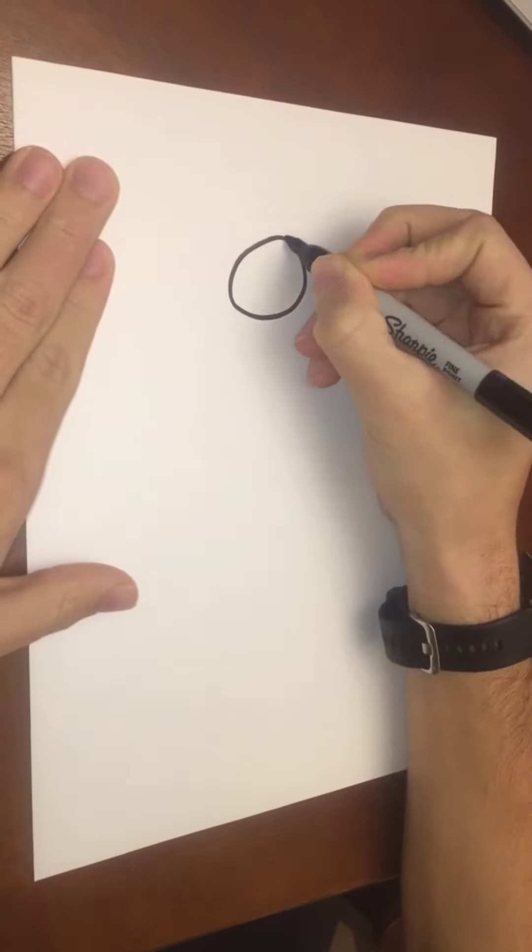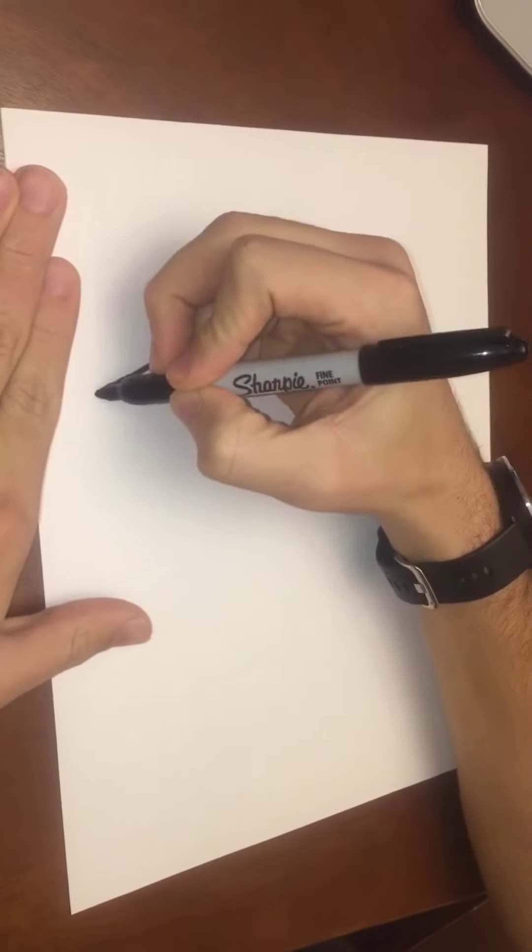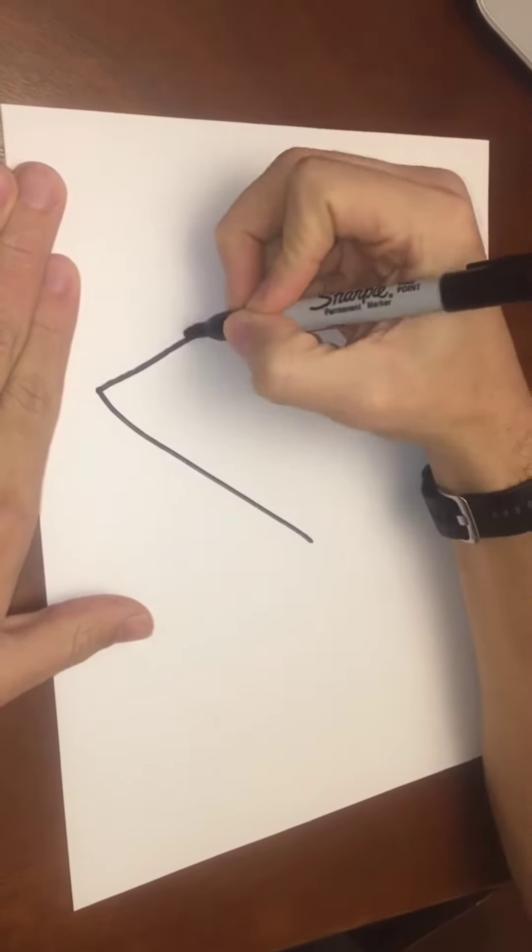Today we will be learning how to draw Phineas and Ferb. Well, just Phineas today. Start with one circle for the eye and his face kind of looks like a Dorito.